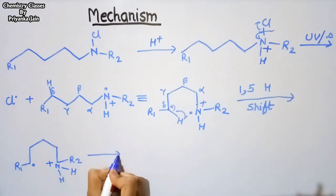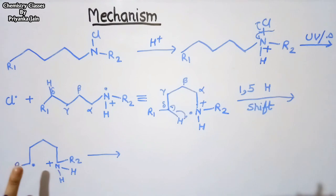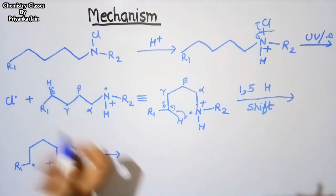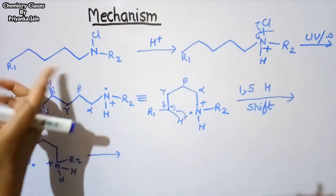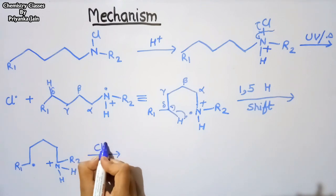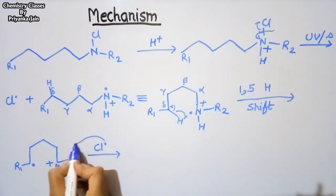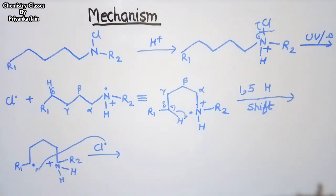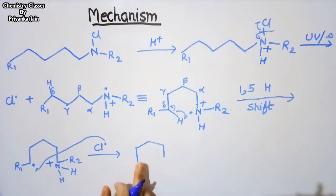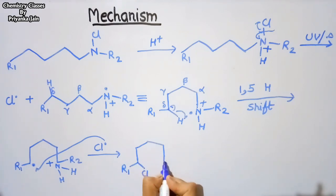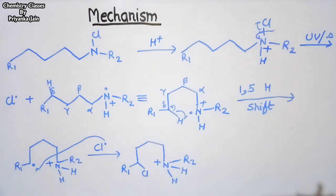In the next step, since this is a reaction mixture with several molecules of N-haloamines present, this delta carbon radical abstracts one chlorine from another molecule. This provides a propagation step for the reaction. The compound produced is another N-haloamine radical that also undergoes the same reaction. So a new bond is formed between this chlorine and the delta carbon radical.